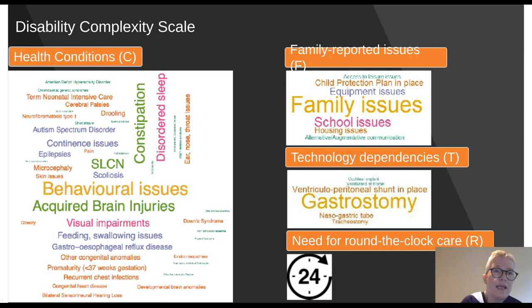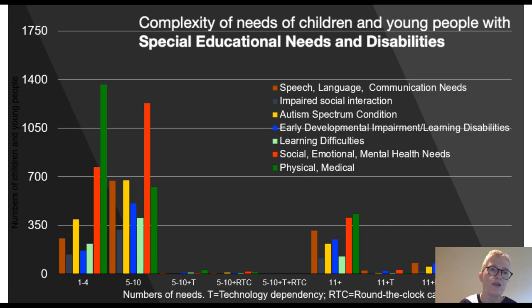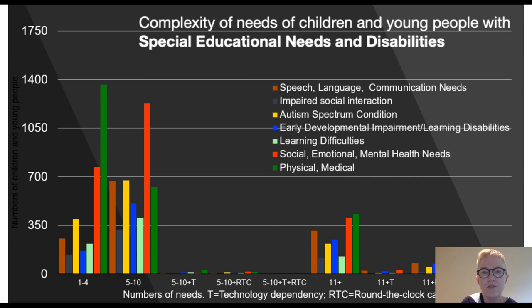The disability complexity scale simply adds up the number of health conditions that apply for a particular child, the number of family-reported issues, the number of technology dependencies, and whether the child needs round-the-clock care. This can convey far more information than simply saying a child's needs are complex. NHS England are quite taken with this model — a graph shows the mapping of the number of needs: one to four needs, five to ten, five to ten for technology dependencies, round-the-clock care, and so forth through to the most complex children who have more than eleven individual needs plus technology dependencies plus a need for round-the-clock care.